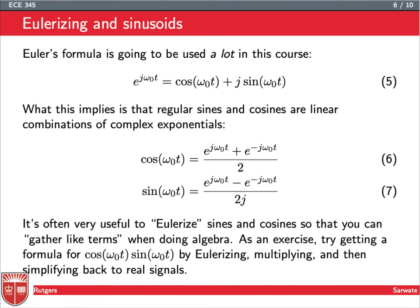So we're going to want to understand more about this periodic function. And Euler's formula is going to be used a lot in this course. And here's the form that we're going to use it in, basically, which is to say e to the j omega naught t is cosine omega naught t plus j sine omega naught t. So that's pretty straightforward. And what this implies is that regular sines and cosines are linear combinations of complex exponentials. So cosine, I can just take e to the j omega naught t plus e to the minus j omega naught t, and the sine terms are going to cancel, and I'll just get 2 times the cosine term. So if I want 1 times the cosine term, I divide by 2.